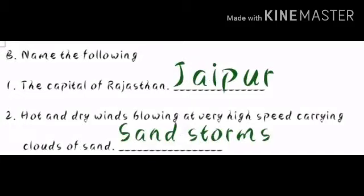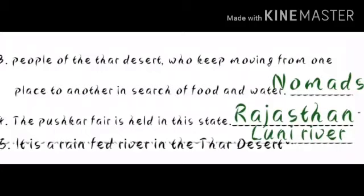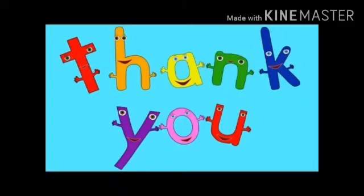Let me repeat the answers. Question 1: The capital of Rajasthan — Jaipur. Question 2: Hot and dry winds carrying clouds of sand — Sandstorms. Question 3: People who keep moving in search of food and water — Nomads. Question 4: The Pushkar Fair is held in — Rajasthan. Question 5: Rain-fed river in the Thar Desert — Luni River. Thank you, see you next time.